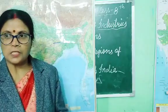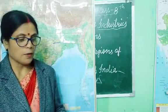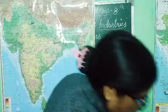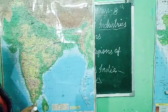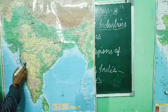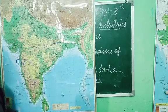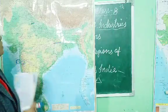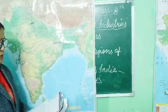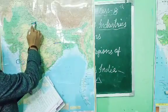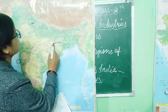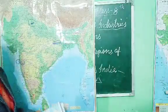Given below are the major industrial regions in India. First is the Mumbai-Pune industrial region. Second is the Hooghli industrial region near Kolkata. Third is the National Capital Territory region. Fourth is the Chota Nagpur Plateau industrial region in Jharkhand.